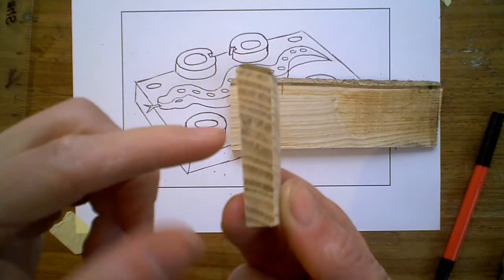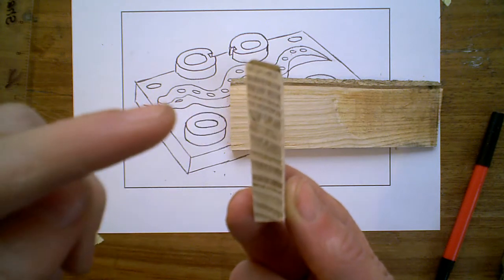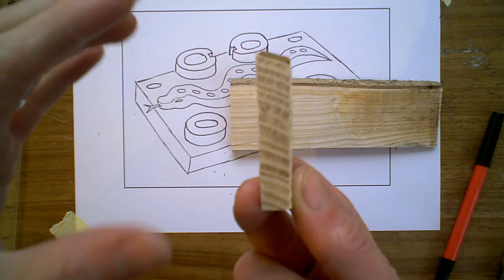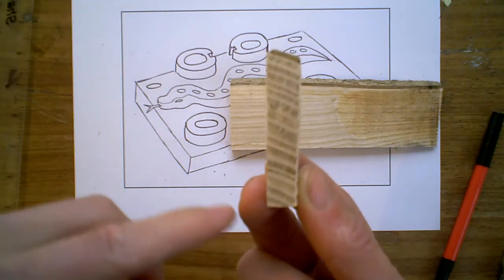So running around, so this is the end grain. The tree would have actually been growing upwards towards you. And if we actually had the full piece of wood that I cut this from, it would have the growth rings running around as circles within there.